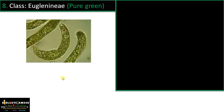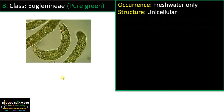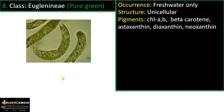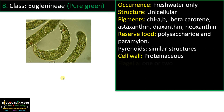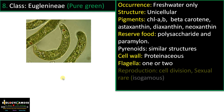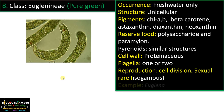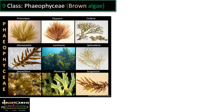Class 8 is Euglenophyceae, the pure green algae. They are unicellular. Pigments include chlorophyll A and B, beta-carotene, astaxanthin, diadinoxanthin, and neoxanthin. Reserve food is polysaccharides and paramylon. Pyrenoid-like structures are present. Cell wall is proteinaceous. Flagella: one or two. Reproduction by cell division; sexual reproduction is very rare. The most well-known member of this class is Euglena.